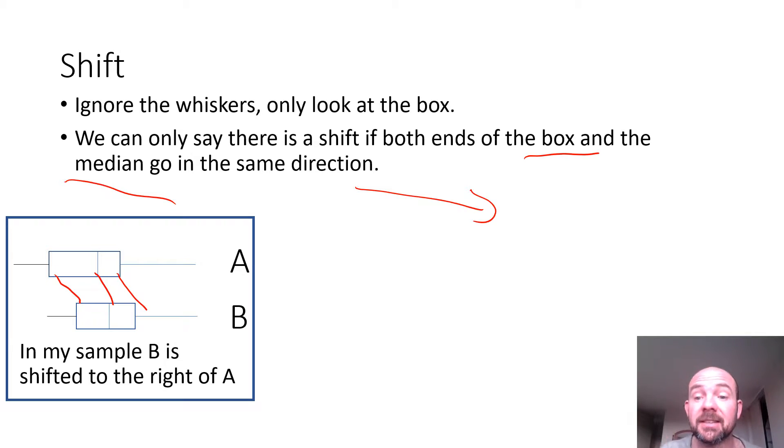Notice it says in my sample. Earlier me was much smarter there. So in my sample B is shifted to the right of A. We don't know that that's necessarily what's happening in the population. That's part of what we're trying to decide.